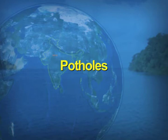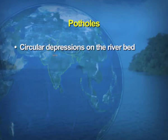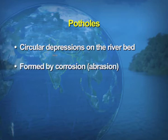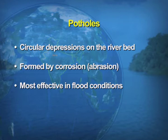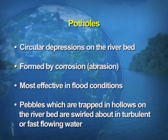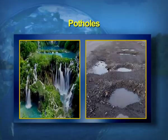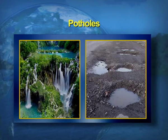What are potholes? The circular depressions on the riverbed are known as potholes. These are formed by the abrasion action of the river and are most effective in flood conditions. The pebbles which are trapped in the hollows on the riverbed are swirled about in the turbulent river. The visual shows how the great depressions are formed where the water permanently falls, resulting in potholes.